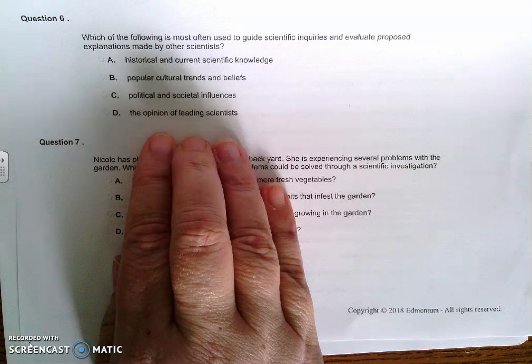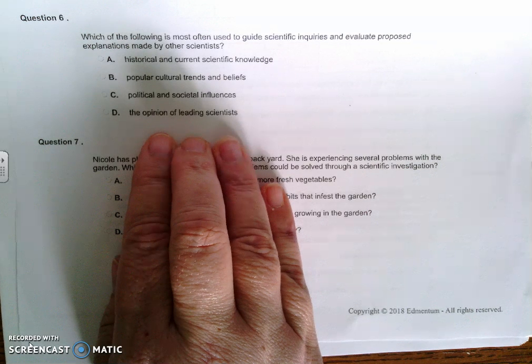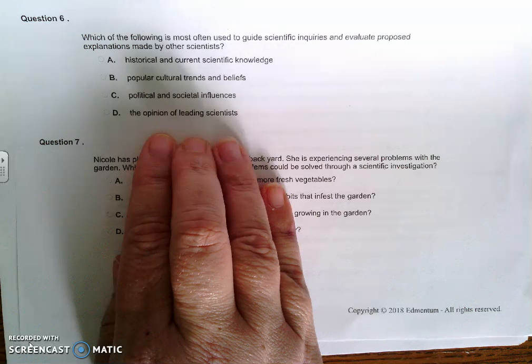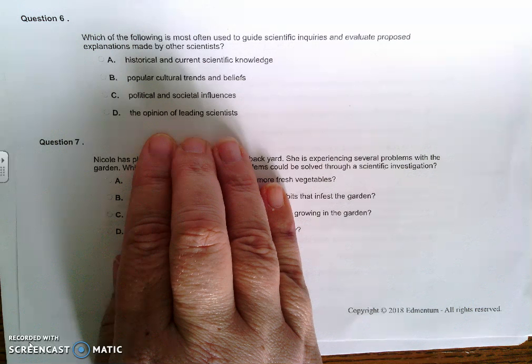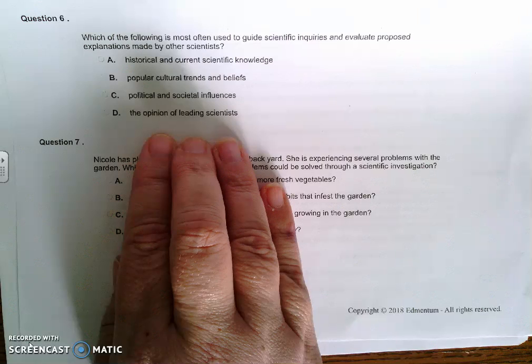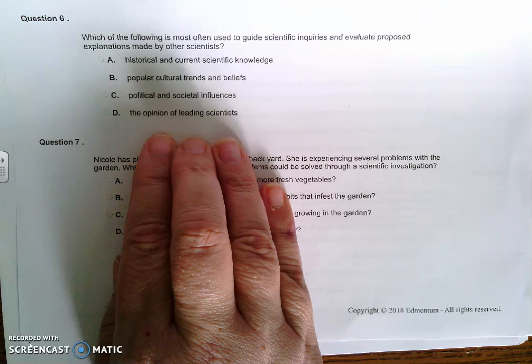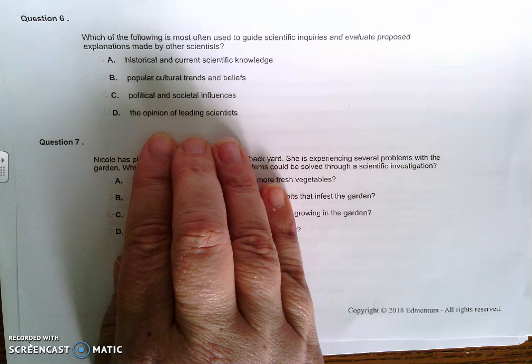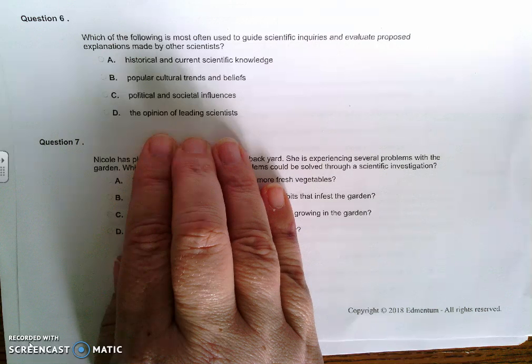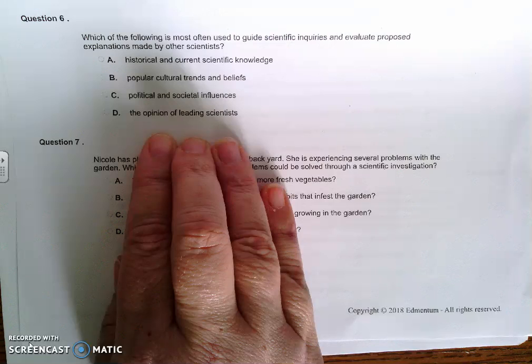Which of the following is most often used to guide scientific inquiries and evaluate proposed explanations made by other scientists? The answer to number six is A, historical and current scientific knowledge. And the reason for that, these things influence and guide the design and interpretation of scientific inquiries as well as evaluation of proposed explanations made by other scientists.